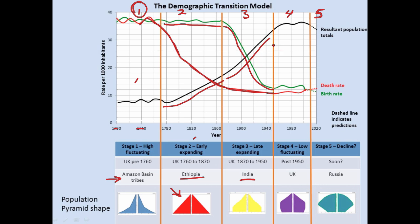Once we get to stage four, things balance out and you have a pretty stable population. The population has grown quite a lot, but in stage four it stabilizes. The death rate is pretty low and the birth rate is pretty low. Examples of stage four countries would be the UK, America, Australia, Canada — highly developed nations like that.